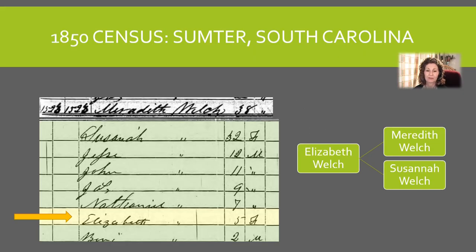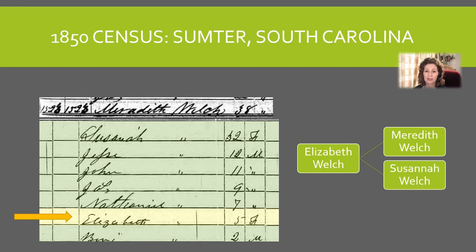On that 1850 census in South Carolina we found an Elizabeth Welch, and her parents — well, we supposed they were her parents — were Meredith and Susanna Welch. Meredith is listed a little bit differently because he was on the previous page. Anytime you find a family at the beginning or bottom of a census page, always look at the next page to see if there's more of the family. The age seemed to match: our Elizabeth born 1845 would be five in 1850 and born in South Carolina, so this looked like a good match.